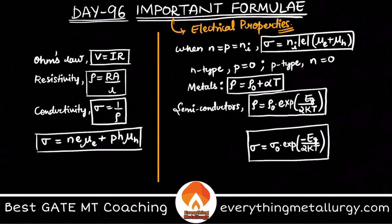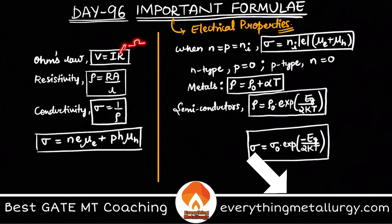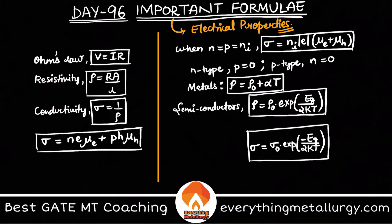Looking at the units: the unit of resistance is ohms, A is in meters squared and L is in meters, so the meters cancel, giving the unit of resistivity as ohm·meter. So ohm·meter is the unit of resistivity.